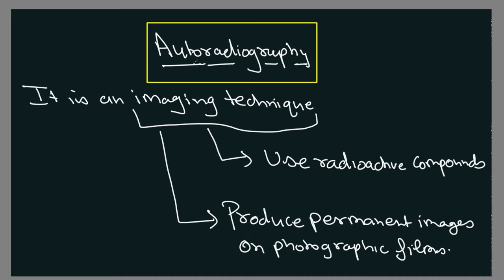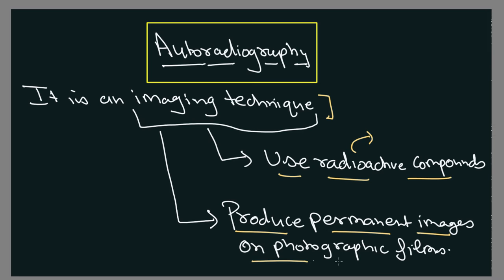What is autoradiography? Autoradiography is an imaging technique in which we use generally radioactive compounds. We can also use other light-emitting compounds, but generally we are going to use radioactive compounds. These radioactive compounds emit radiations, and by using those radiations, we produce a permanent image on photographic films. So by using autoradiography, we are going to develop an image of the cell or the tissue under study.